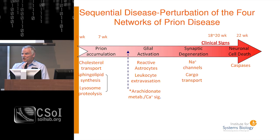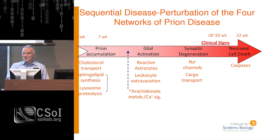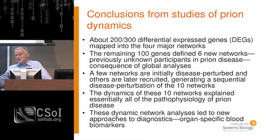We put together eight inbred strain/prion strain combinations of mice carefully designed so we could subtract away various aspects of the biology. When finished, we ended up with a core of about 300 genes. We mapped those 300 differentially changing genes into the four major biological processes known from serial histopathologic studies of the brain: prion accumulation and replication, two types of neurodegeneration, and activation of inflammatory responses. Two-thirds of those 300 genes mapped into the four major networks; the remaining 100 genes identified six networks no one ever knew were associated with the disease. All 10 networks were sequentially activated at different time points during disease progression.